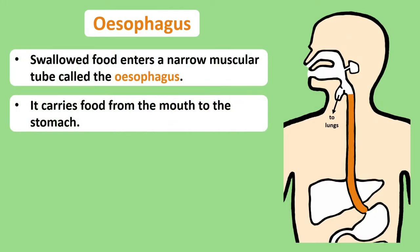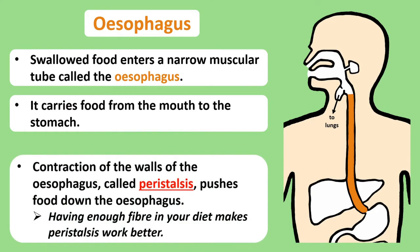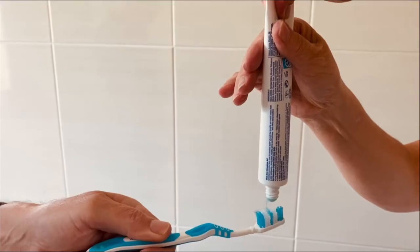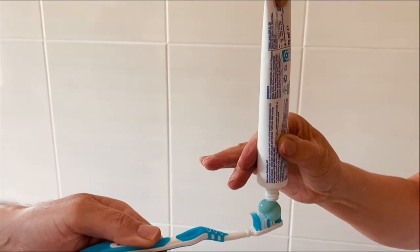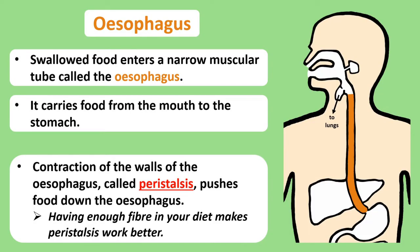Once food is swallowed, it goes to the next part of the system called the oesophagus. The oesophagus is a tube made from muscle, and it takes swallowed food towards the stomach. It moves food by a process called peristalsis, which is the contracting or squeezing of the muscular wall of the oesophagus to push food further down. One way of picturing peristalsis in the oesophagus is by squeezing toothpaste from a tube — when you squeeze the top of the tube, toothpaste comes out the other end. Having fibre in your diet is essential for peristalsis to work properly.